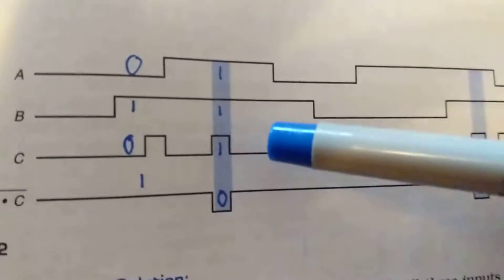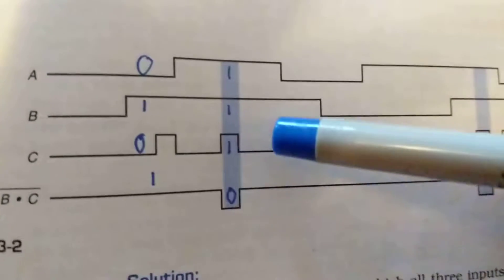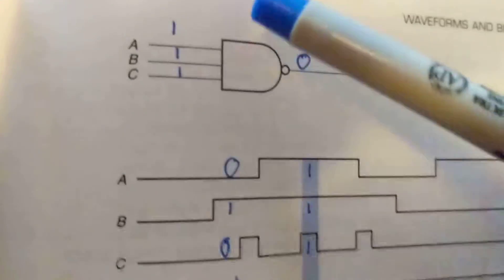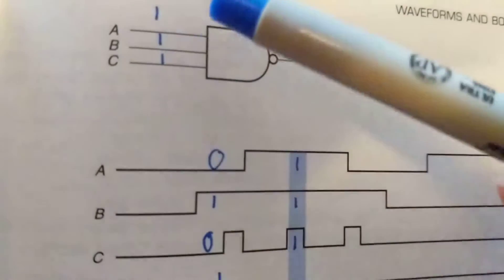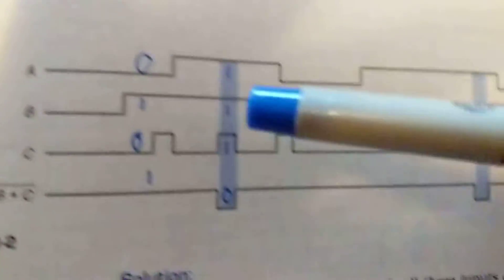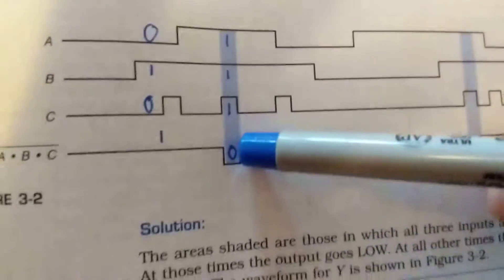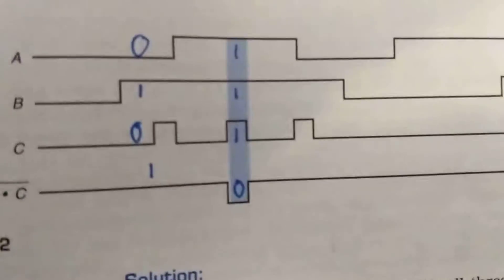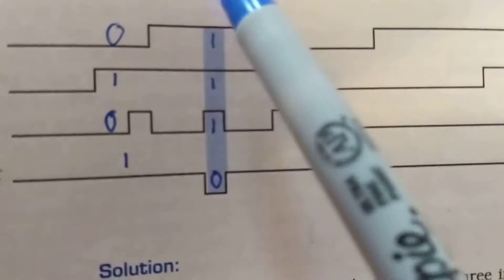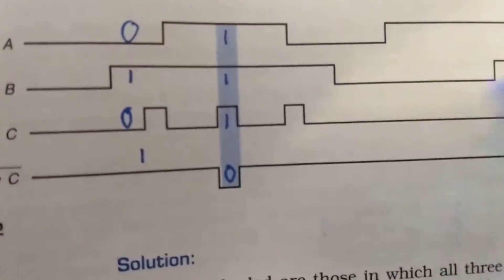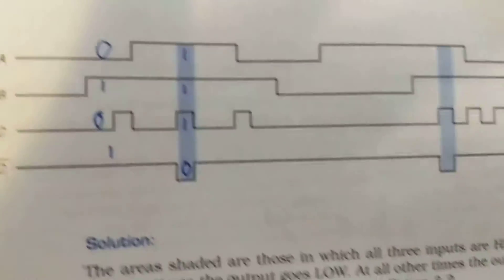This verifies our truth table: when all the inputs are ones — I don't care if you have two, three, or four inputs — as long as all of them are ones the output will be a zero. If you looked at the waveform on a logic analyzer, this tells you the truth table. Let's go to the OR gate.